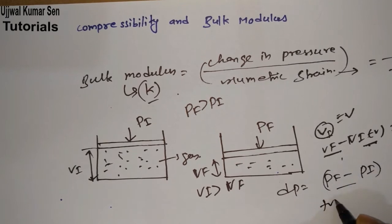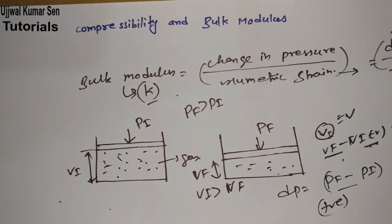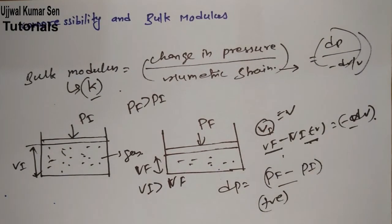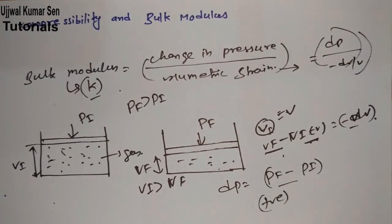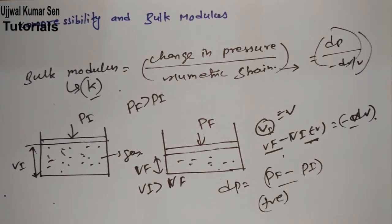Change in pressure dP is equal to Pf minus Pi, so this would become positive. The formula we got here is dP upon minus dV upon V for bulk modulus, which is denoted by K. So this is all about bulk modulus.